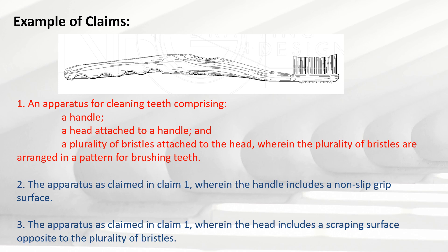The third claim states: 'The apparatus as claimed in claim 1, wherein the head includes a scraping surface opposite to the plurality of bristles.' Just opposite to the bristles there is a scraping surface which can be rubbed on the user's tongue to remove impurities. This is also a feature that is not essential to the core invention, so it is added in the dependent claim. This is the format for writing claims, and any non-provisional complete patent application will have a claims section as the most important part of the specification.